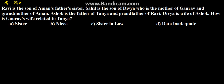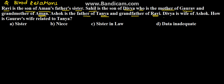Here we are on problems on blood relation. The problem is: Ravi is the son of Aman's father's sister. Sahil is the son of Divya, who is the mother of Gaurav and grandmother of Aman. Ashok is the father of Tanya and grandfather of Ravi. Divya is the wife of Ashok.